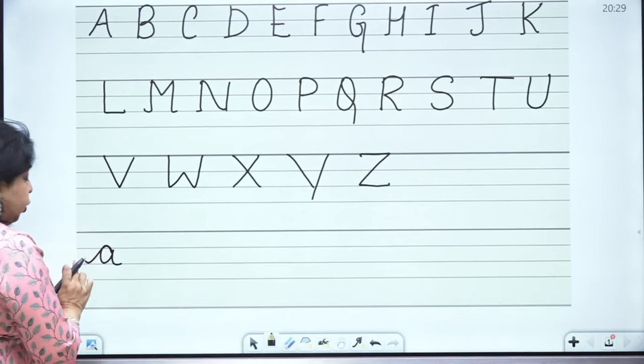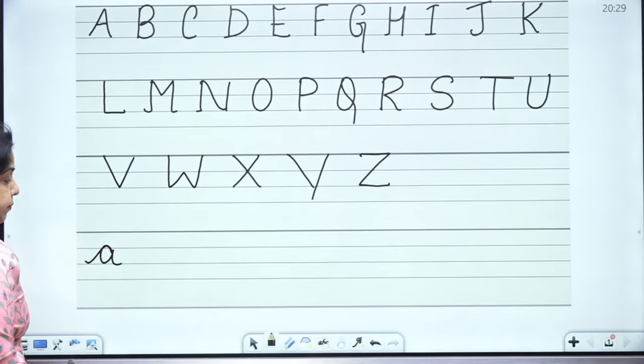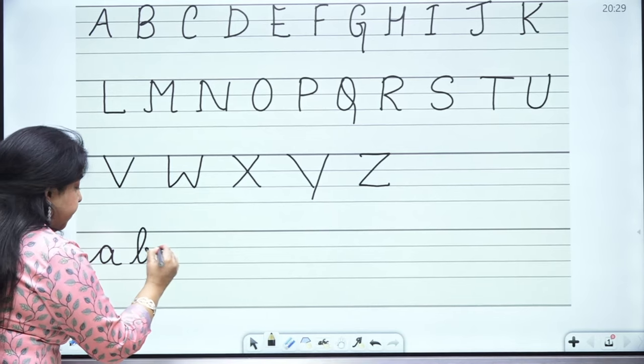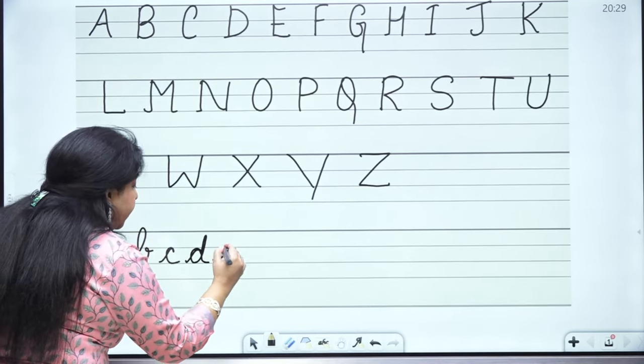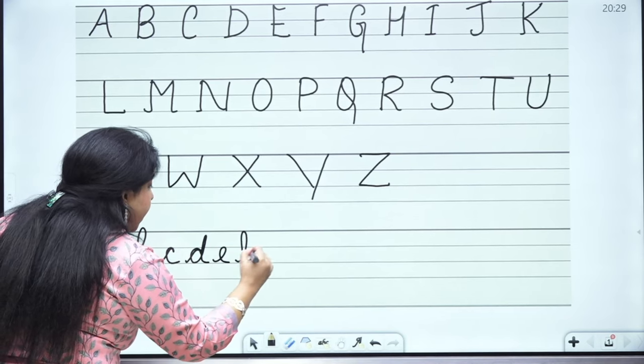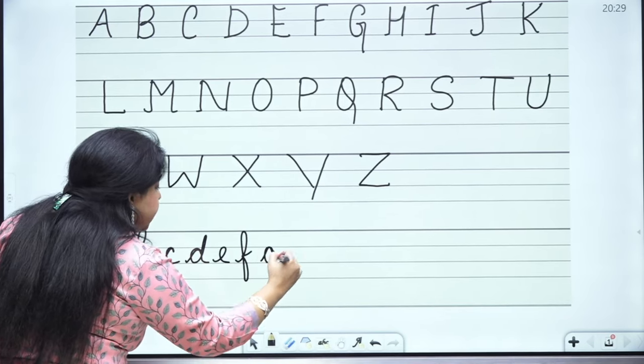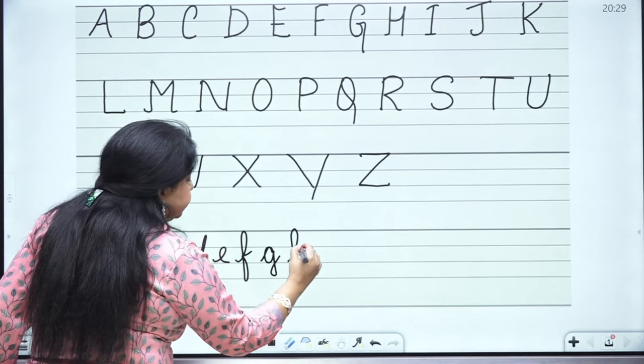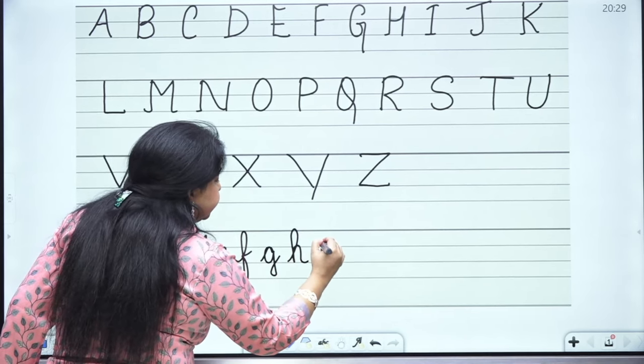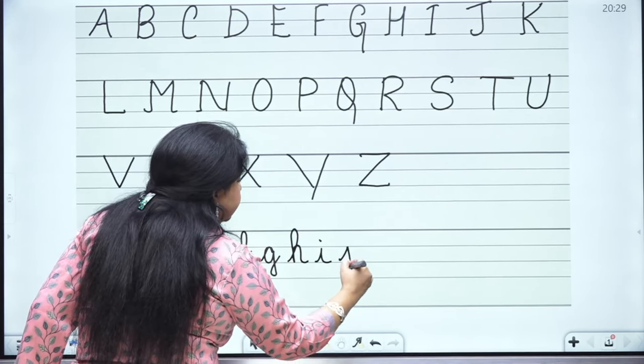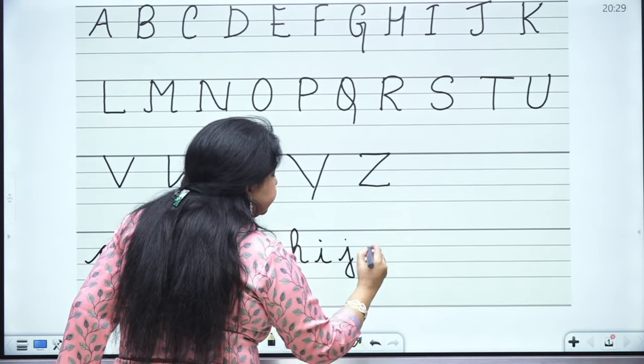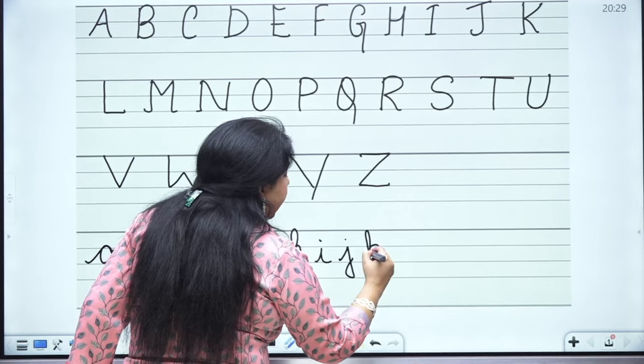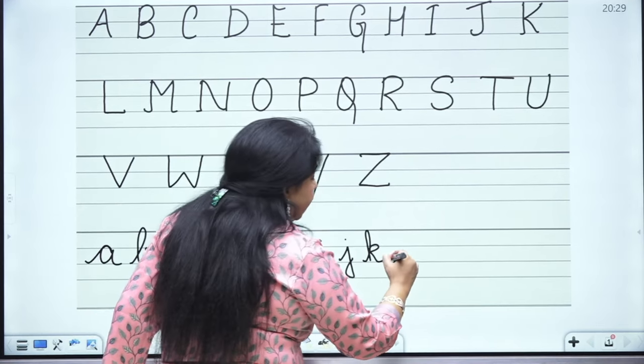Look at A. You have to ask both sides. B, C, D, E, F, G, H, I, J. Look at K. This is like this. L.